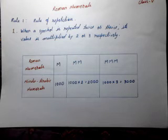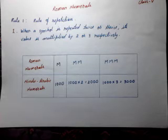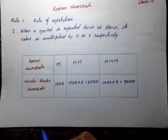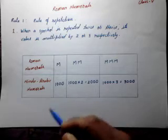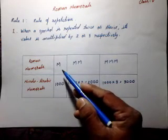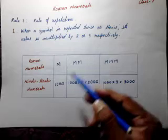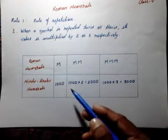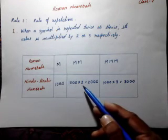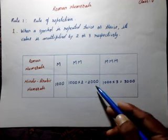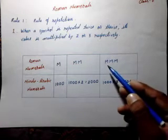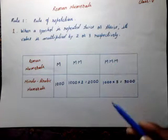When a symbol is repeated twice or thrice, its value is multiplied by 2 or 3 respectively. You can see this table. M stands for 1000, MM means 1000 multiplied by 2, which equals 2000, and MMM means 1000 multiplied by 3.